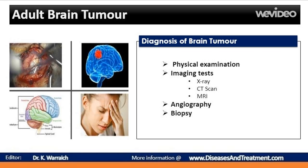The doctor may also evaluate your muscle strength, coordination, memory, and ability to do mathematical calculations. Your doctor may order more tests after finishing the physical exam. These could include a CT scan of the head. CT scans allow your doctor to get a more detailed scan of your body than they could with an X-ray machine, and can be done with or without contrast.